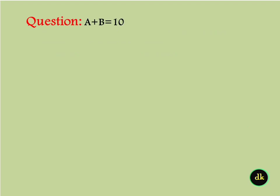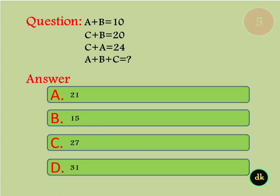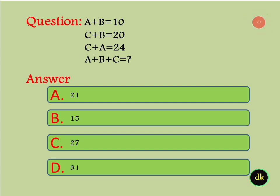A plus B is equal to 10. C plus B is equal to 20. C plus A is equal to 24. A plus B plus C is equal to? Answer: 27.